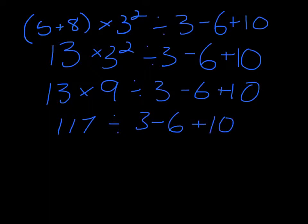117 divided by 3 is 39 minus 6 plus 10. This would be 33 plus 10, and you'd have a final answer of 43.